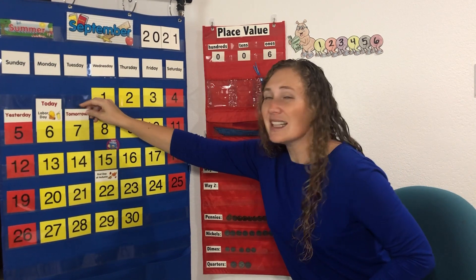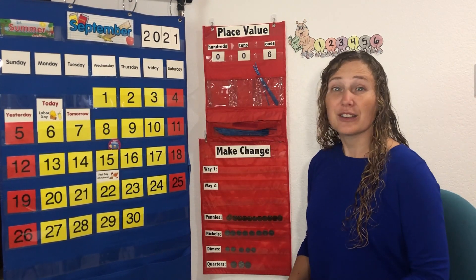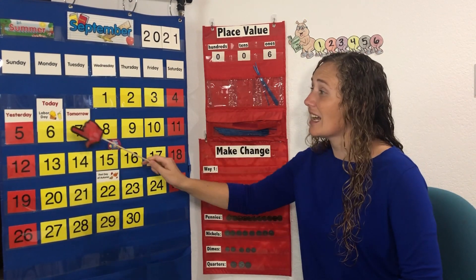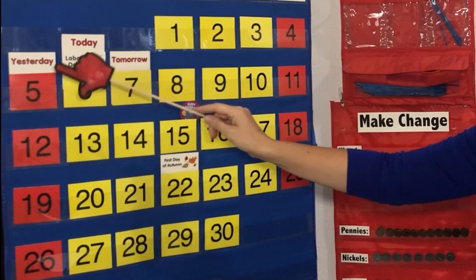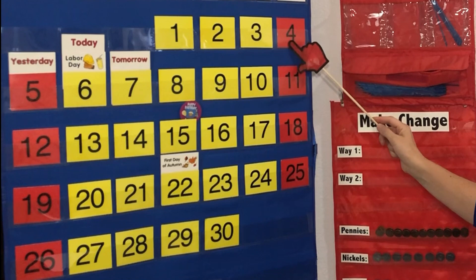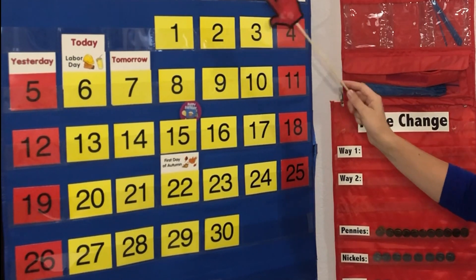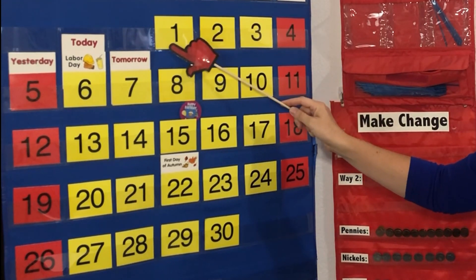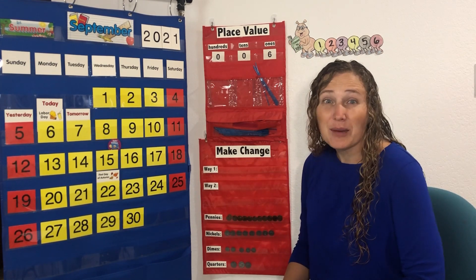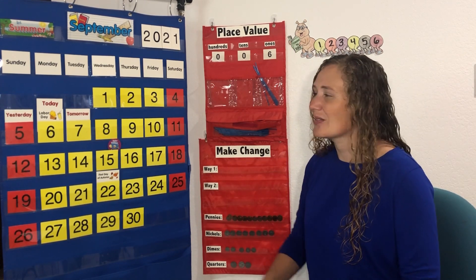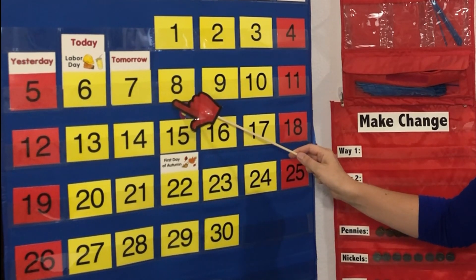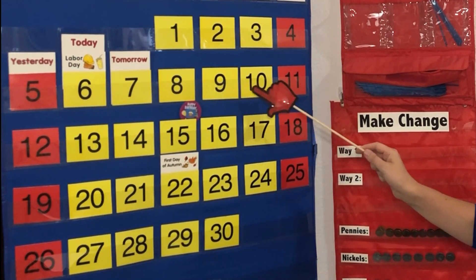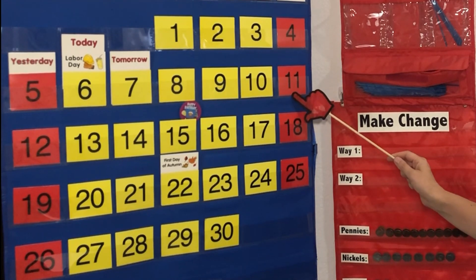Let's count down from today, down from 6. 6, 5, 4, 3, 2, 1. Now let's count up from 6 together. 6, 7, 8, 9, 10, 11.